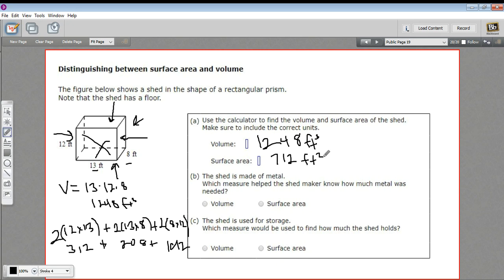B says the shed is made of metal. Which measure helped the shed maker know how much metal was needed? Well, the metal you'd need just to go around all the sides. So this would be surface area. You wouldn't fill up the whole shed, it wouldn't be solid metal all the way through. Just around the outside, that's surface area.